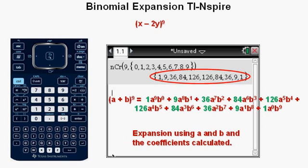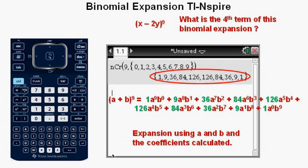Now let's consider an application using the binomial quantity shown above, X minus 2Y to the power of 9. What is the fourth term of this binomial expansion?